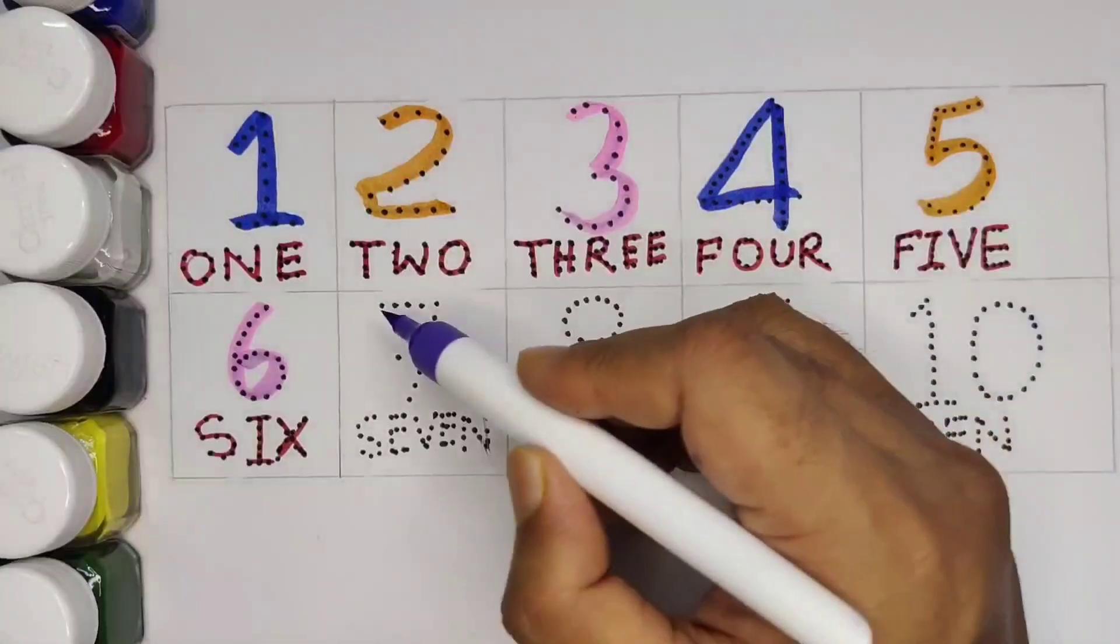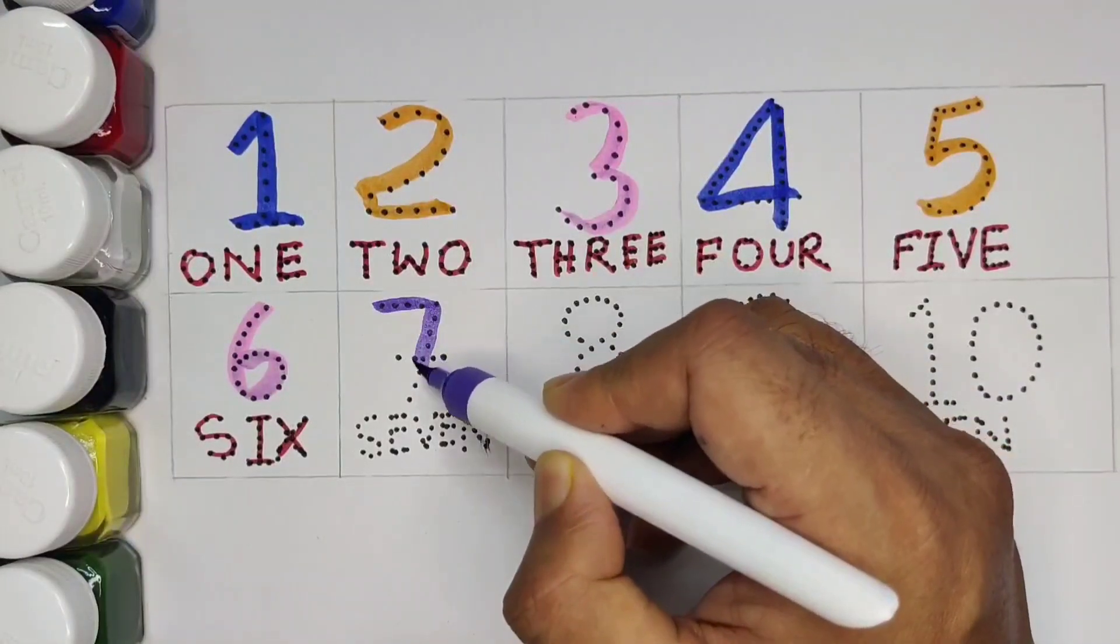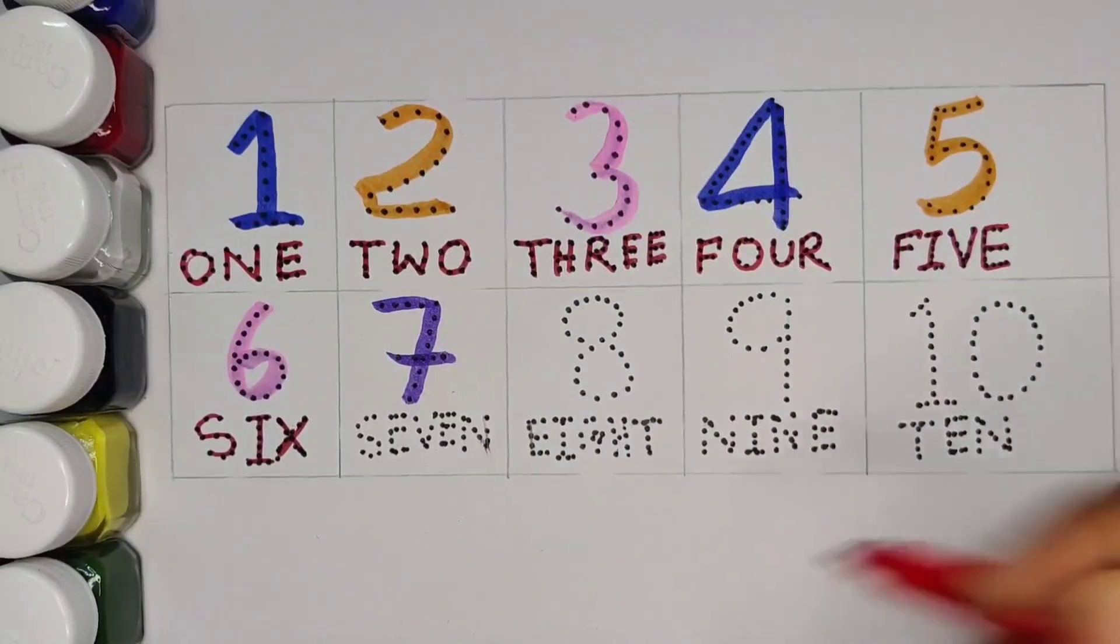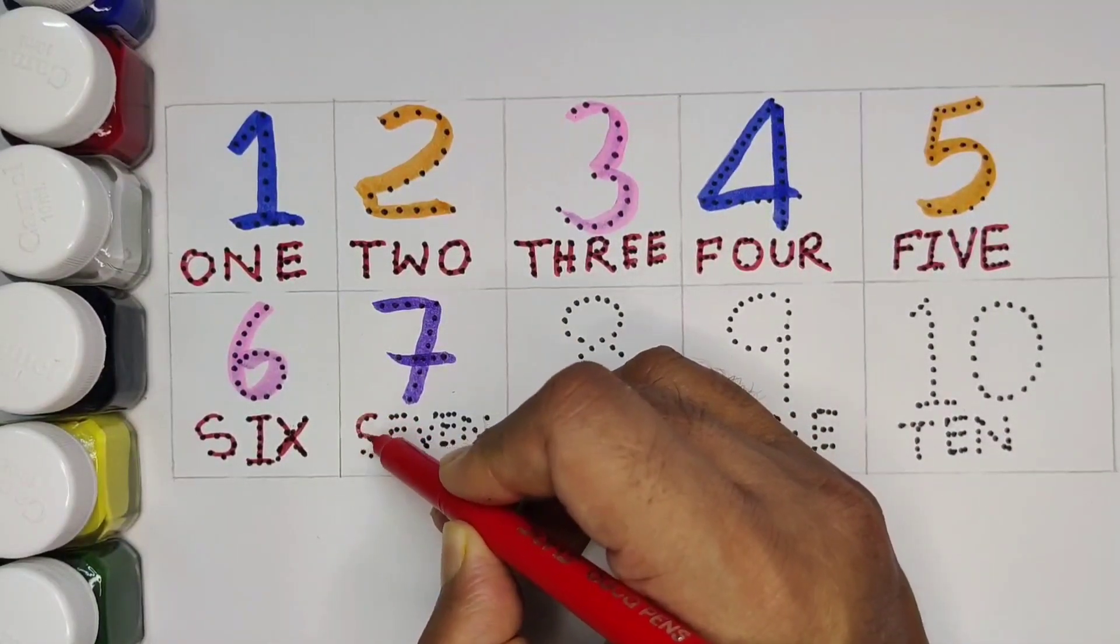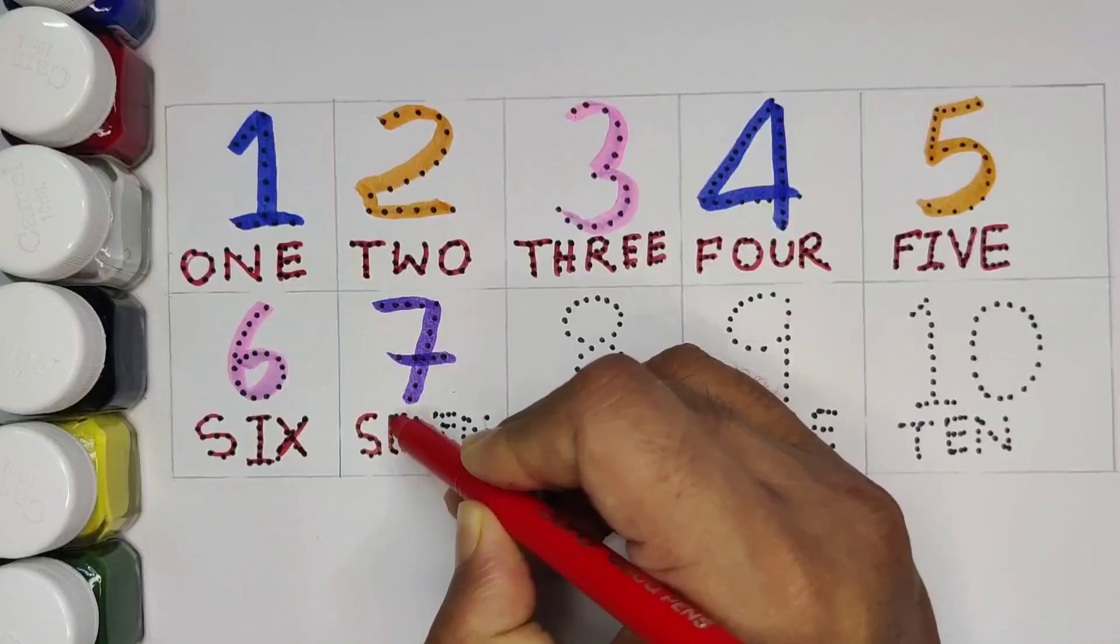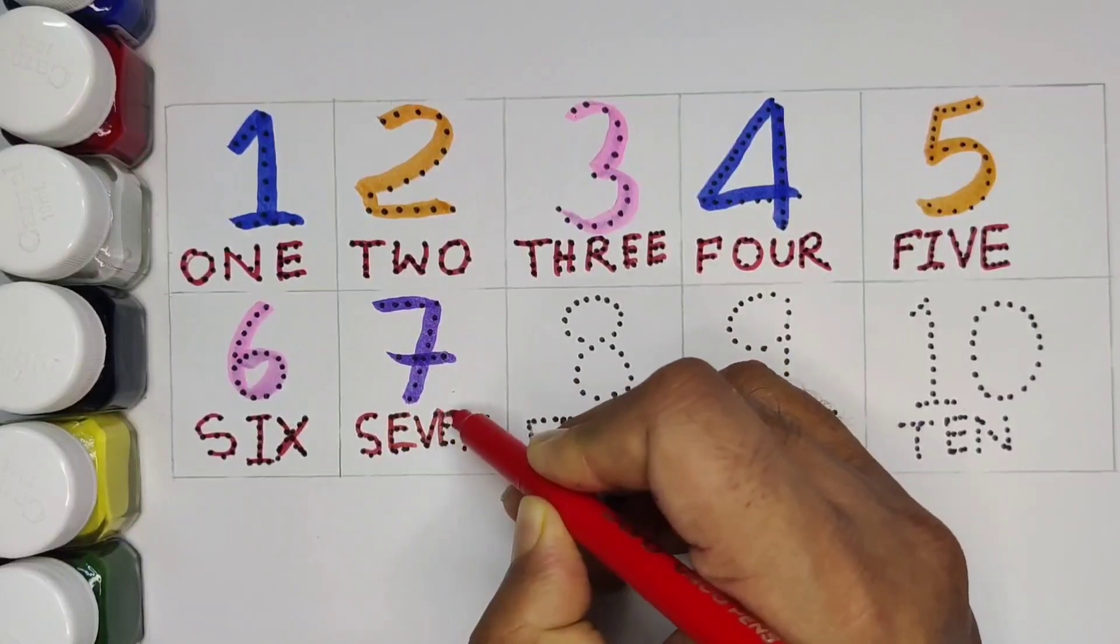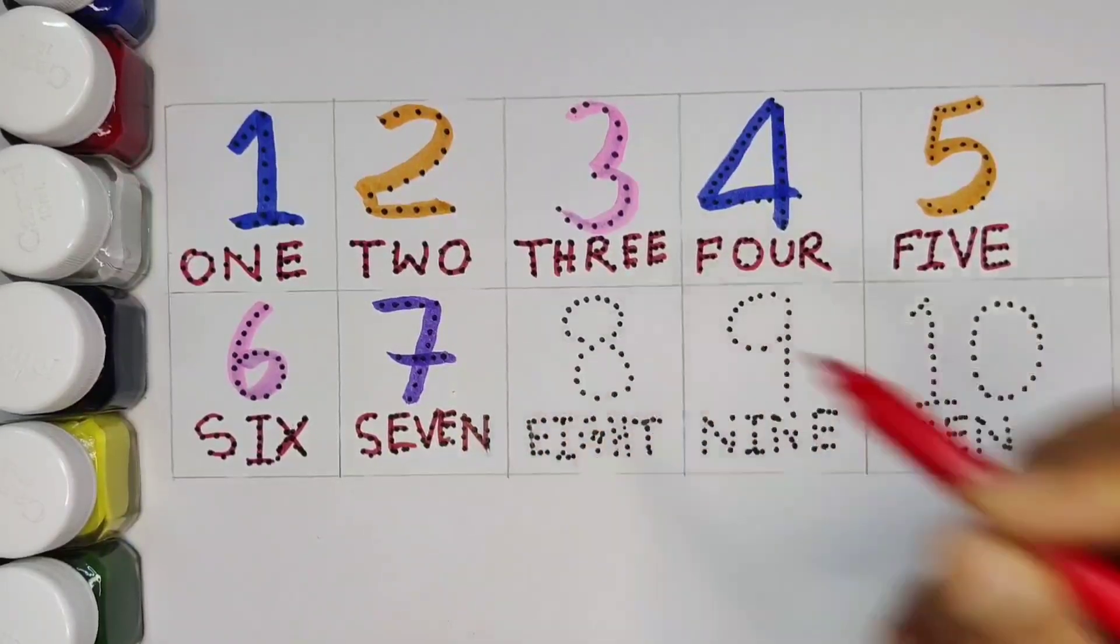And now 7. Green color. Spelling is S.E.V.E.N. 7.